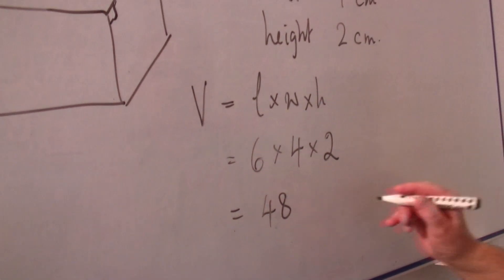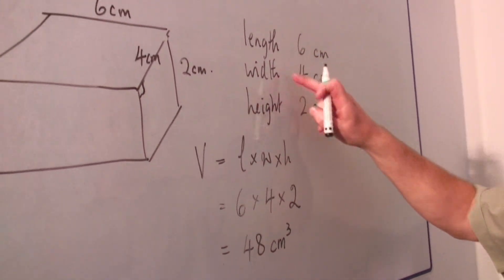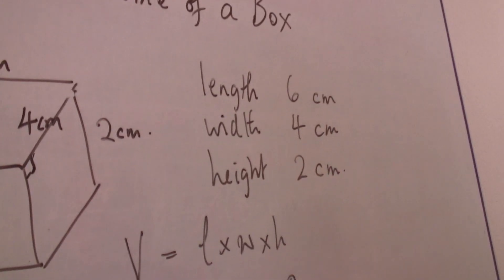And of course this is a volume, so it's centimeters cubed, because three distances, three length centimeters times centimeters times centimeters gives us centimeters cubed.